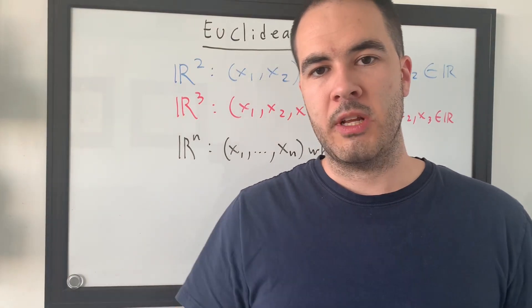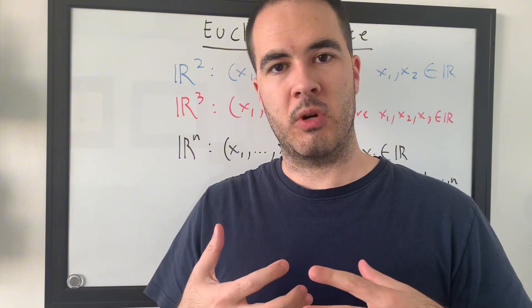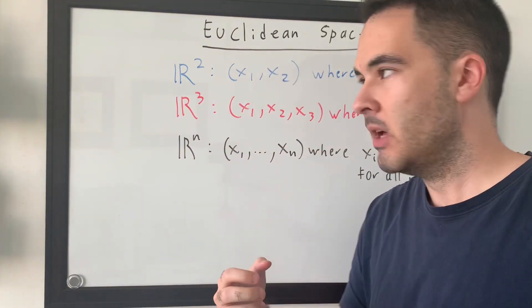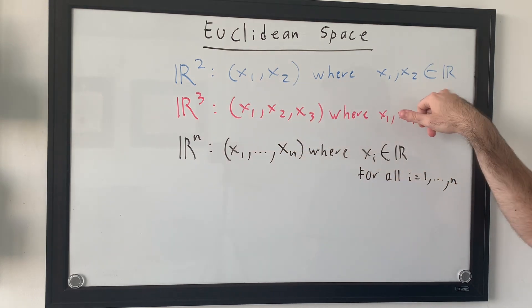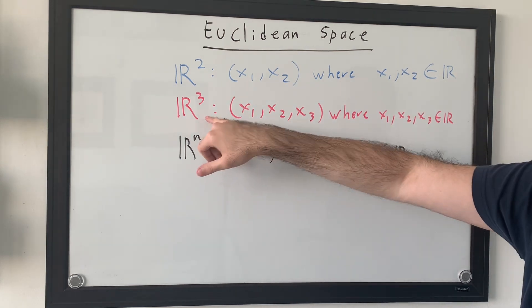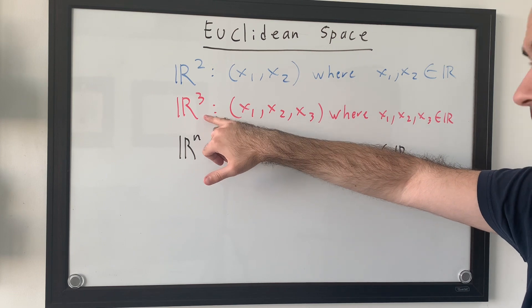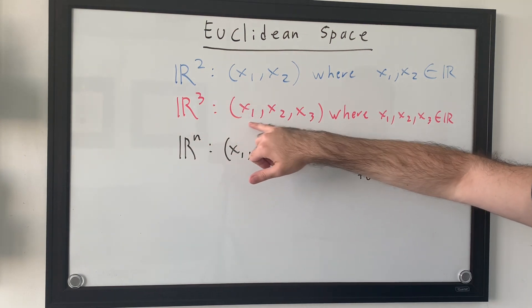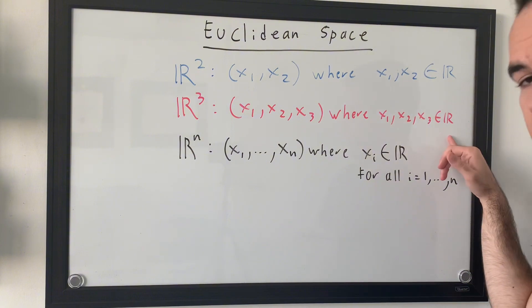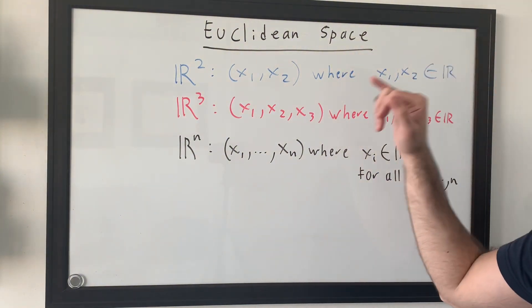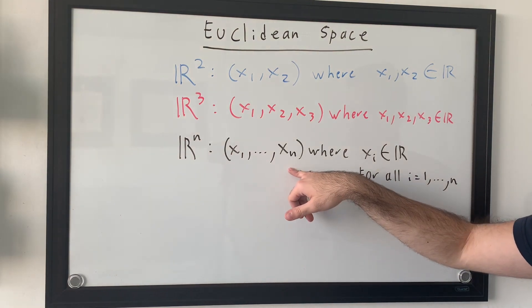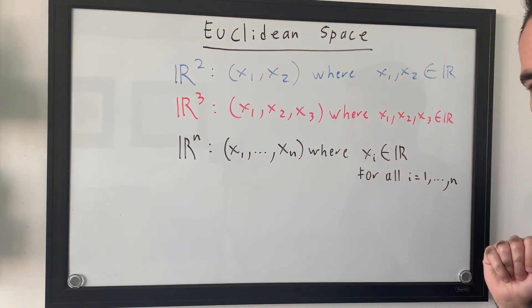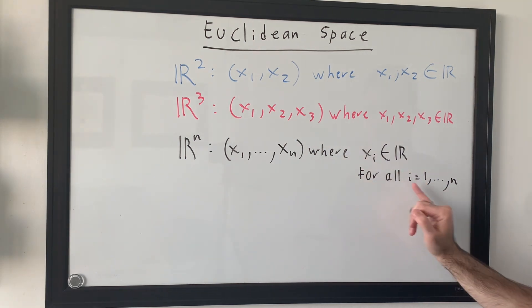So what a Euclidean space does is it extends the real numbers past one dimension. So, for instance, Euclidean space for R2 would be X1 and X2, where they are both real numbers. A Euclidean space with three dimensions is R3, which is X1, X2, and X3, where all of these are real numbers. And finally, a Euclidean space of N dimensions is X1 all the way to XN, where each of these are real numbers. And normally written in this way, where we write for all I in, from 1 to N.